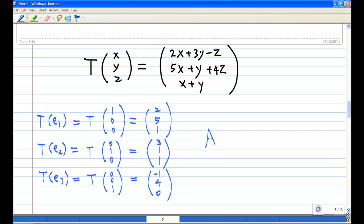The matrix A is given by [T(e₁), T(e₂), T(e₃)], and that is equal to the matrix with columns (2, 5, 1), (3, 1, 1), and (-1, 4, 0).